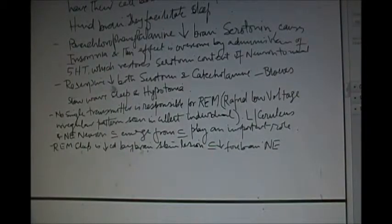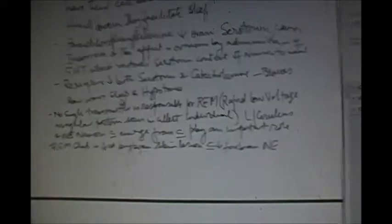The drug reserpine decreases both serotonin and catecholamine that blocks the slow wave sleep and hypotonia. No single neurotransmitter is responsible for REM sleep. In REM sleep we have rapid low voltage irregular pattern as seen in an alert individual.